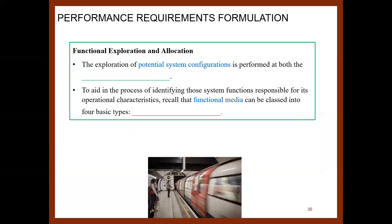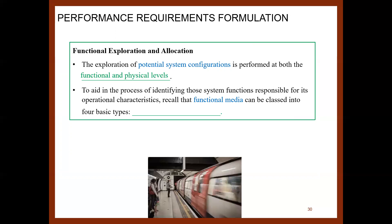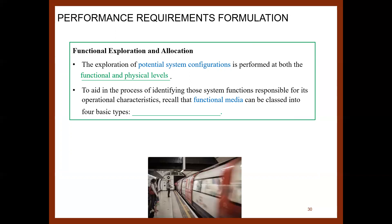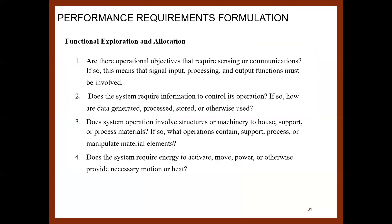In functional exploration and allocation, the exploration of potential system configurations is performed at both the functional and physical levels. Functional media can be classed into four basic types: signals, data, materials, and energy. Key questions include: do the operational objectives require sensing or communications? If yes, signal input, processing, and output functions must be involved. Does the system require information to control its operation — if so, how is data generated, processed, or used? Does the system involve structures or machinery to process materials? Does the system require energy for motion or heat?